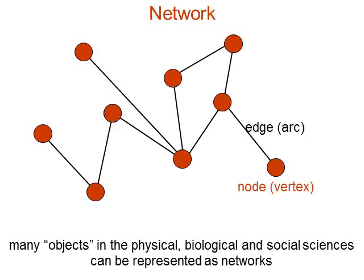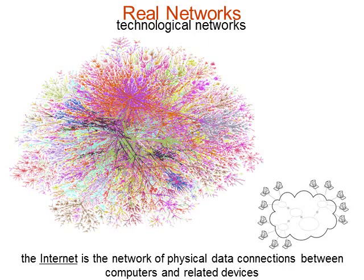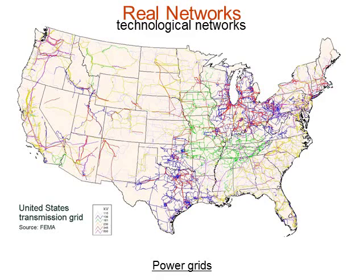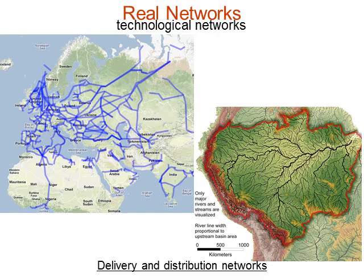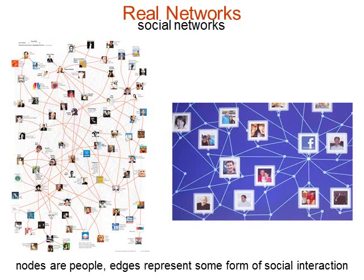For example, the internet is a network of computers connected by wired, wireless, or satellite connections sharing data. You have power grids — networks of power generators connected by wires. There are transportation networks: geographic locations connected by transportation systems, delivery networks like pipelines distributing gas in Europe, natural networks like river networks, and social networks where people are nodes with different types of social relationships.